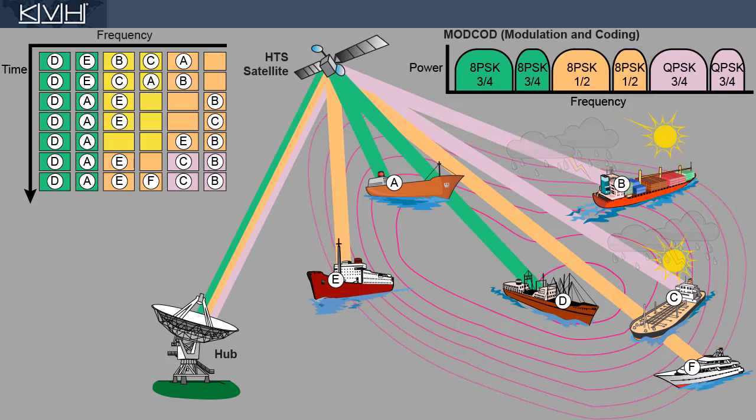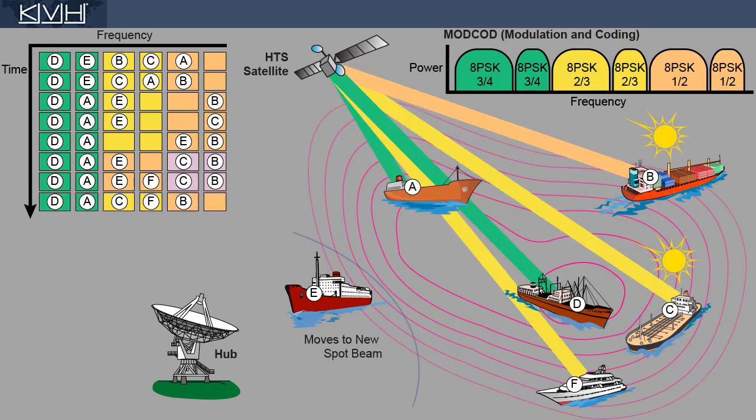When the weather for vessels B and C improves, the hub reinstates the earlier in-route group with the faster, more efficient connections. You can also see that vessel E has transferred to an adjacent spot beam, so it no longer consumes the time slot on this beam.